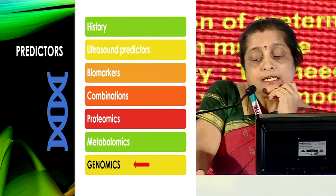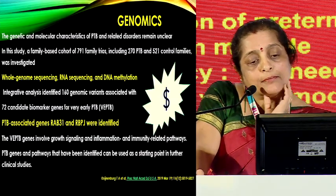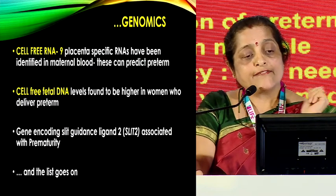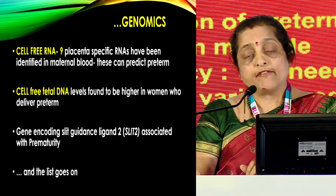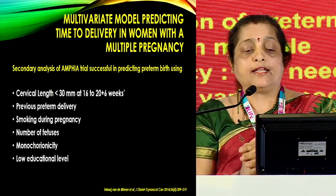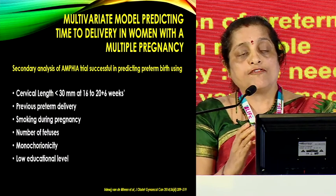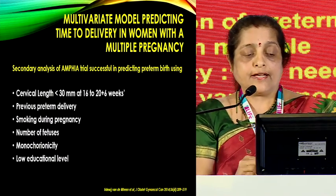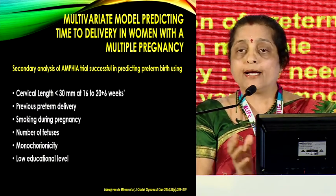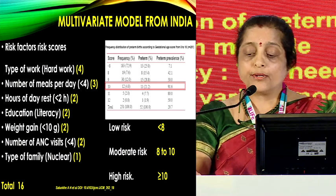We still have genomics to explore. Cell-free RNA and cell-free DNA particles have been identified in women at risk of delivering preterm. We need to develop a multivariate model. A recent study by Dimeen showed that analysis of a group of factors — cervical length, previous preterm delivery, smoking, number of fetuses, monochorionicity, and low educational level — when combined and subjected to analysis, showed a positive predictive value correlating with premature pregnancy.